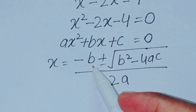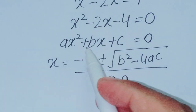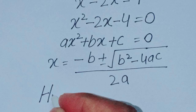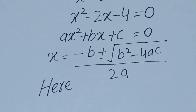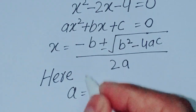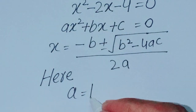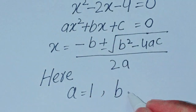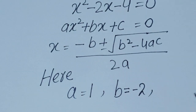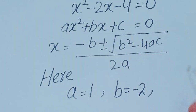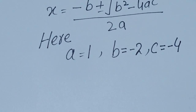Now we find the values of a, b, and c by comparing with the general form. The coefficient of x squared is a, so a equals 1. The coefficient of x is b, so b equals minus 2. The constant term without a variable is c, so c equals minus 4.